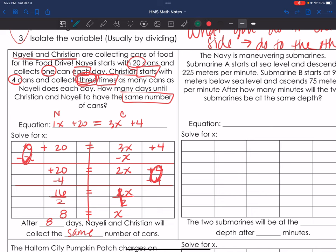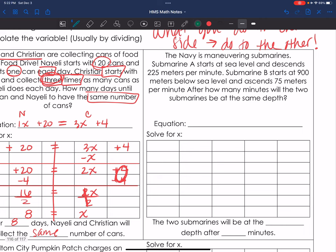Cool. Let's do another example. Example 2. The Navy is maneuvering submarines. Submarine A starts at sea level. Starts. Love that keyword. I'm going to box it. Sea level. Sea level is 0, guys. So I'm going to have A over here and B over here. Starts at sea level and descends. Keyword.